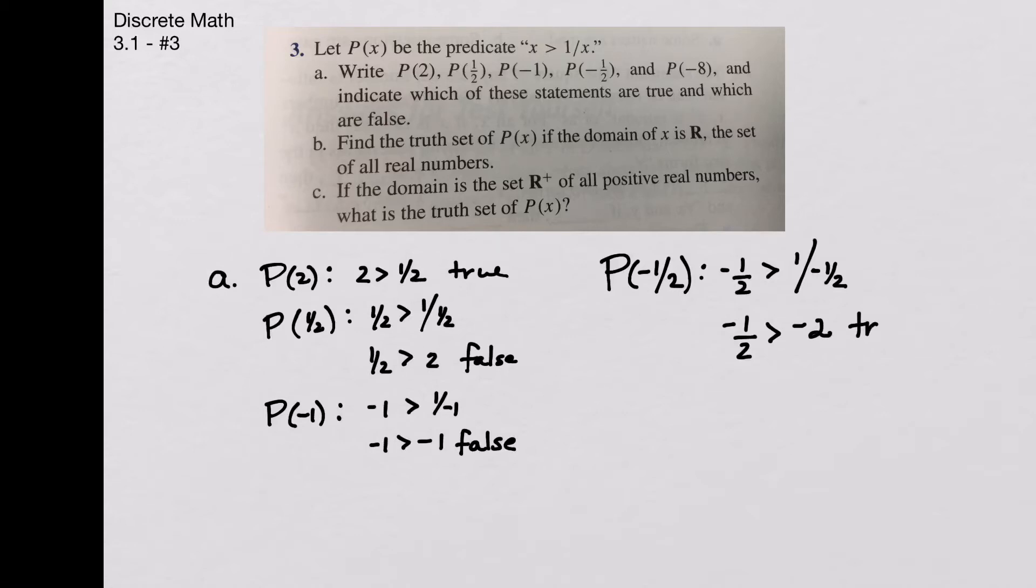And P(-8) says that -8 is greater than 1 over -8, or -8 is greater than -1/8, and that is false. So there are my five statements that we were looking for.